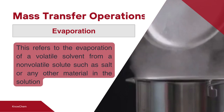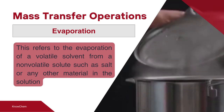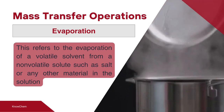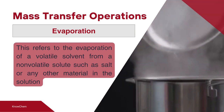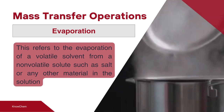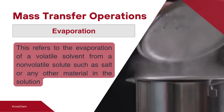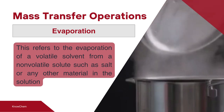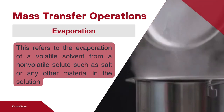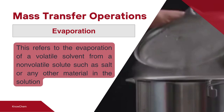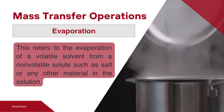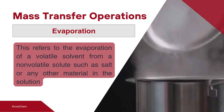Let's begin our discussion with the first type of mass transfer operation, which is evaporation. Evaporation is a mass transfer where we can achieve the separation of solute from solution on the application of heat as energy. This applies to all solutes that are non-volatile in nature. An example is a saturated solution of salt or sugar.